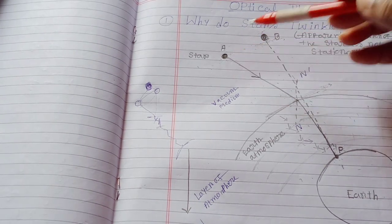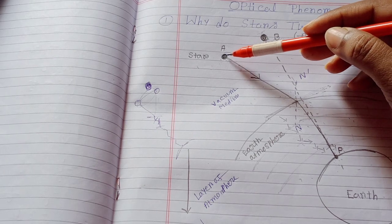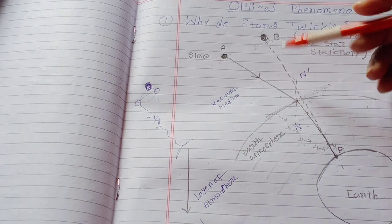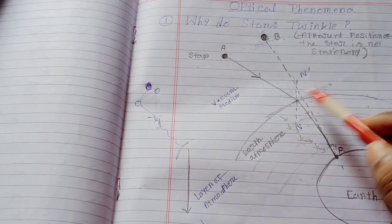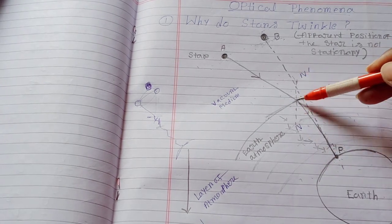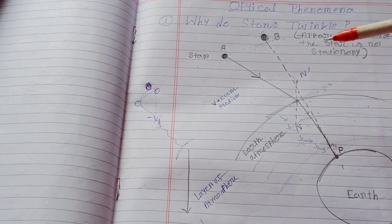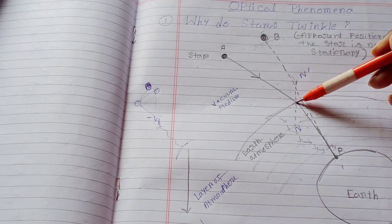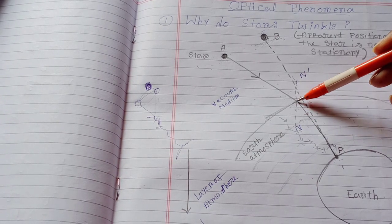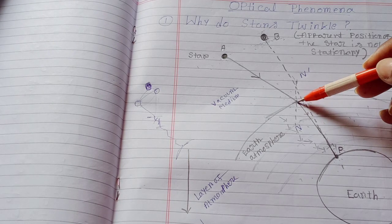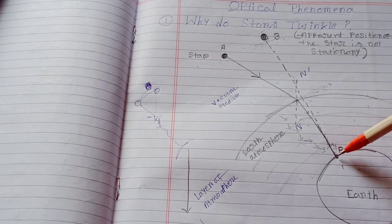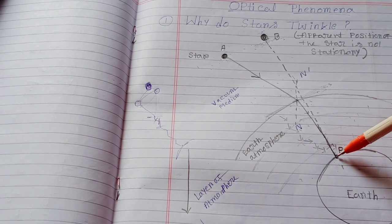Here we are seeing light emerges from the star A, traveling through the vacuum medium and strikes at the surface of these two media. If we draw one normal from this point, then we'll see that after striking this point, the incident ray enters into the denser medium. After entering denser medium, the refracted ray bends towards the normal and travels through the denser medium. It reaches to the eyes of the observer P.